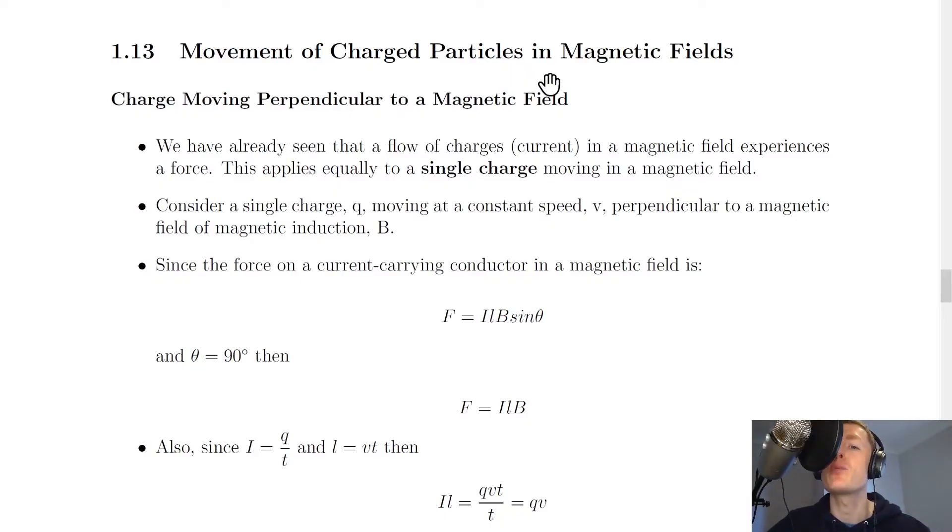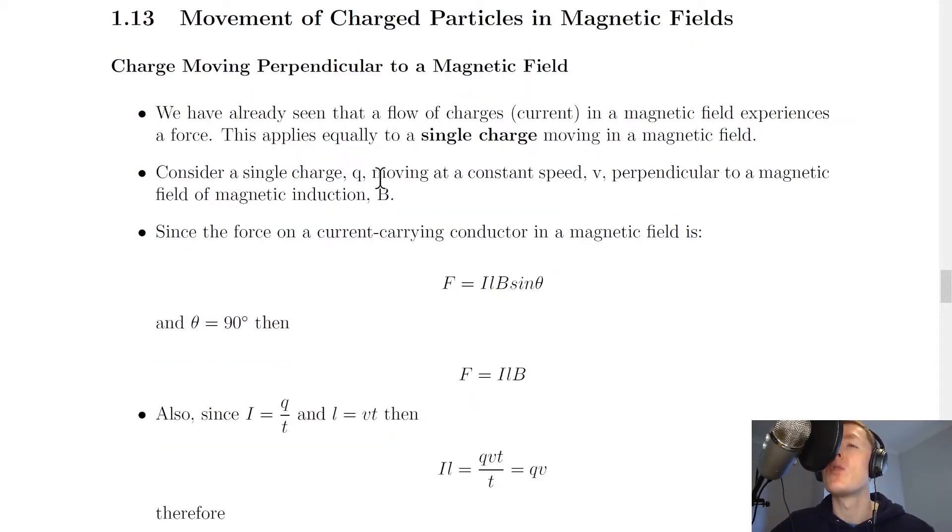Now we've seen previously the movement of charged particles in electric fields, but now we're going to focus on magnetic fields. It starts here by saying that we have already seen that a flow of charges, i.e. a current, in a magnetic field experiences a force. This applies equally to a single charge moving in a magnetic field. So instead of a flow of current we're now just focusing on single charges.